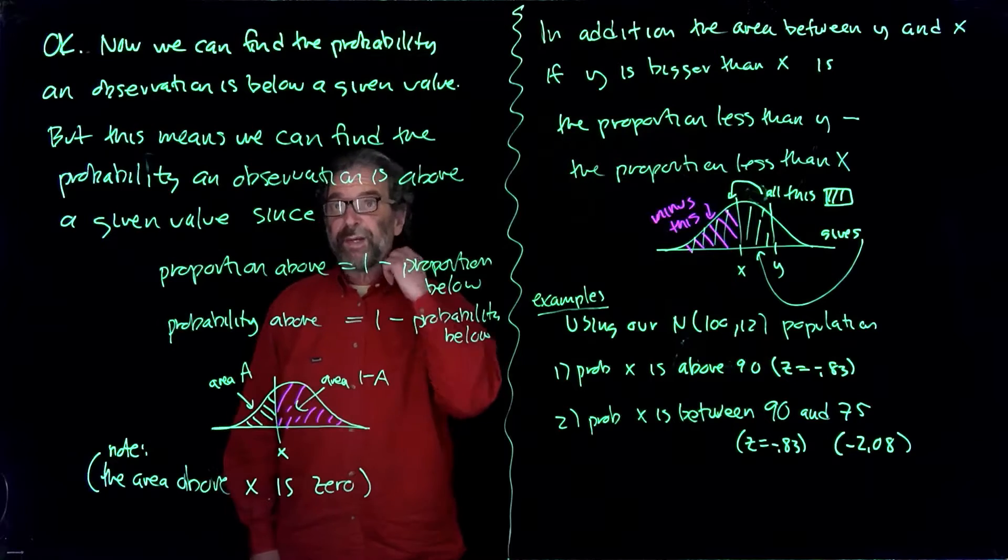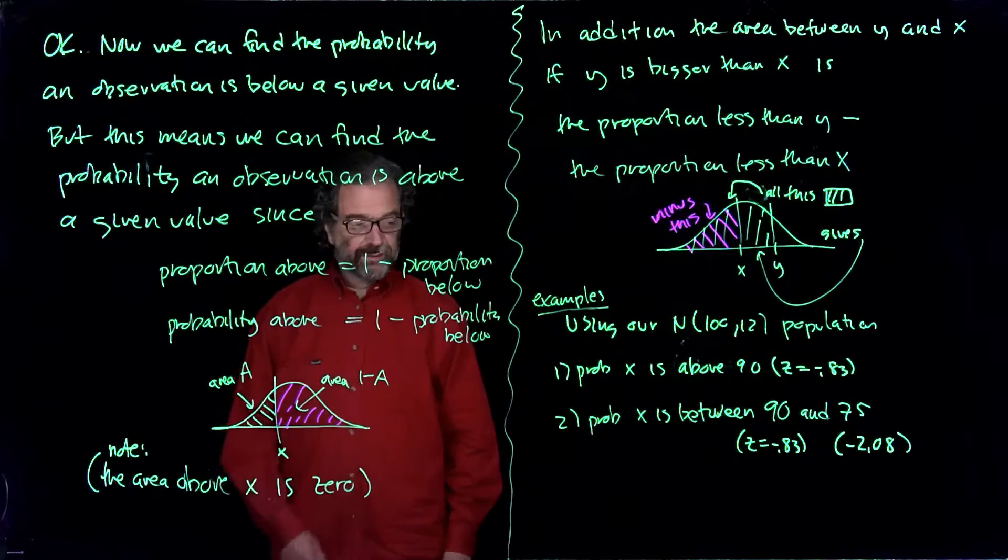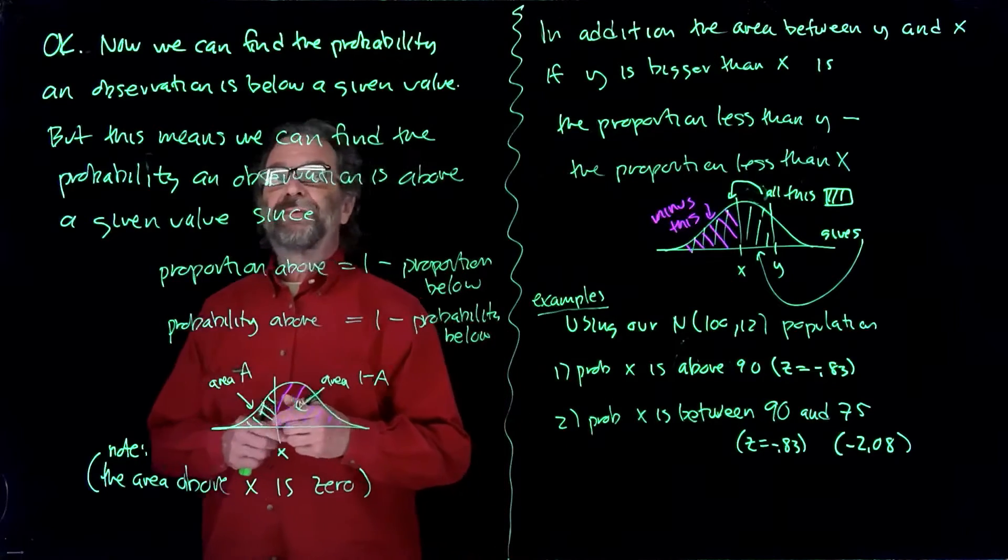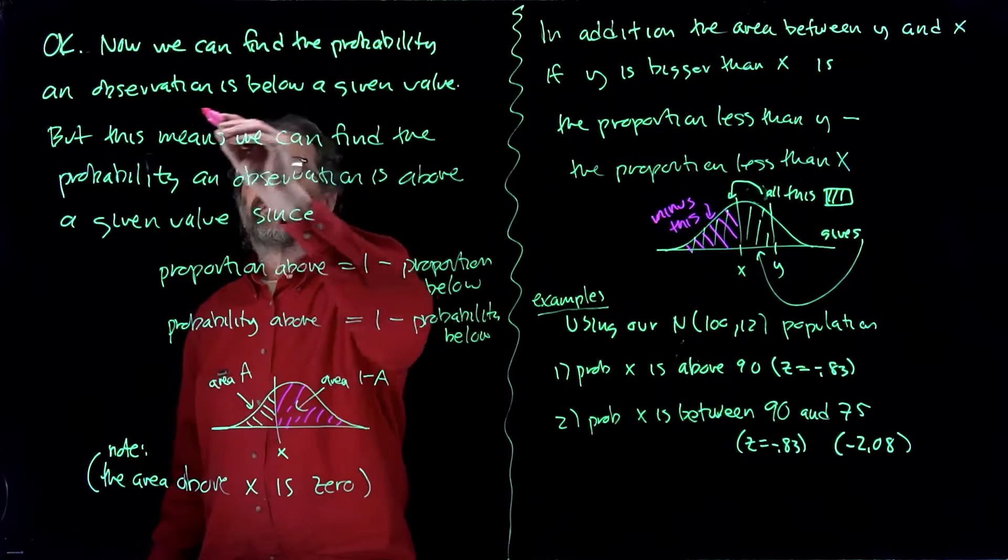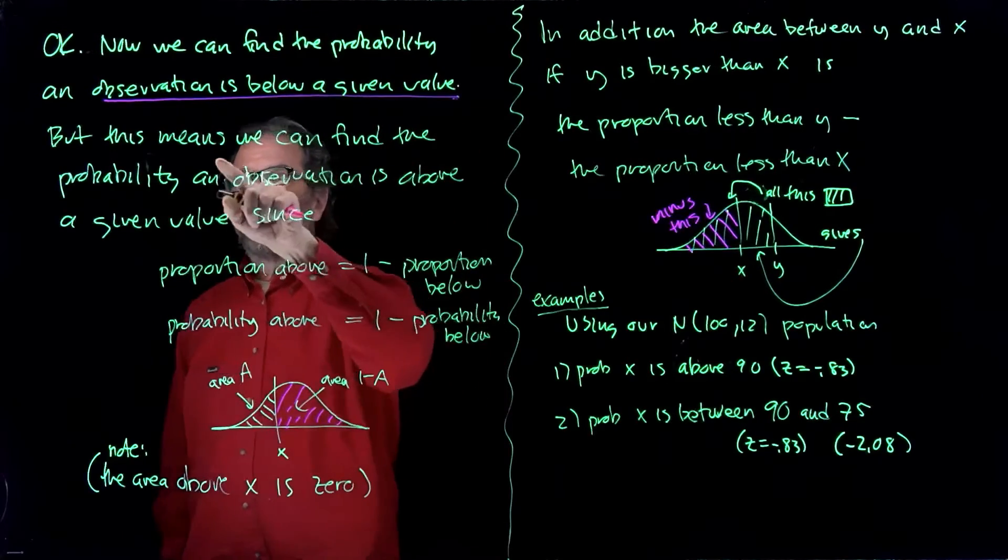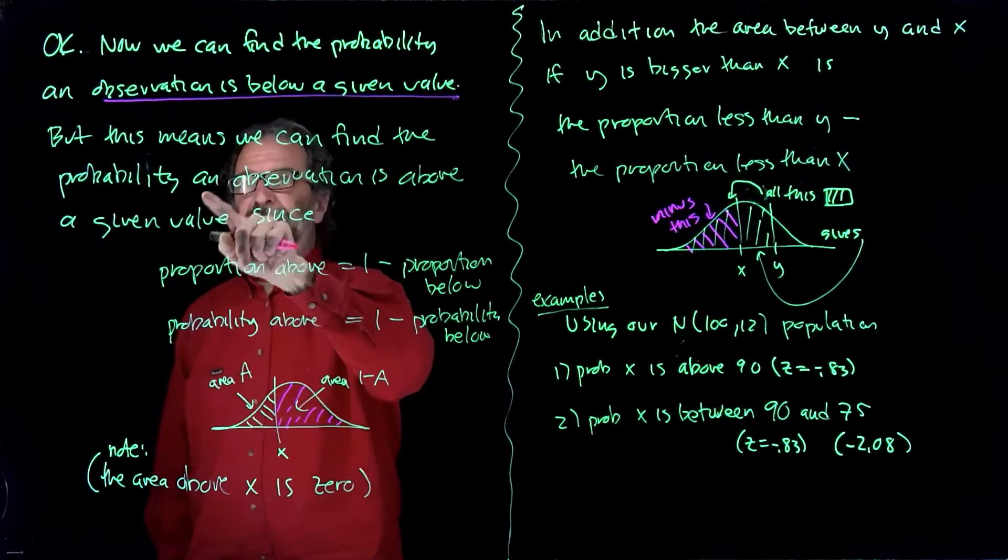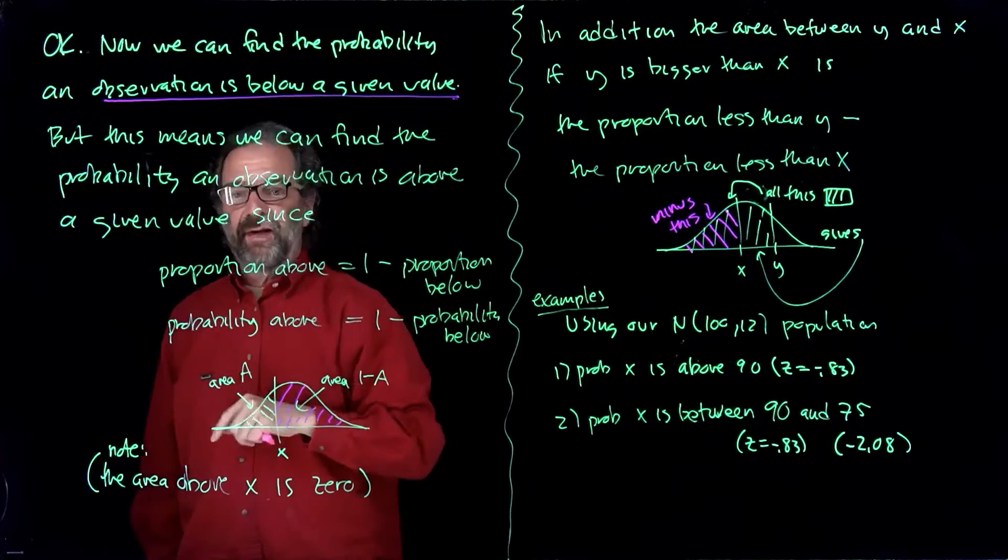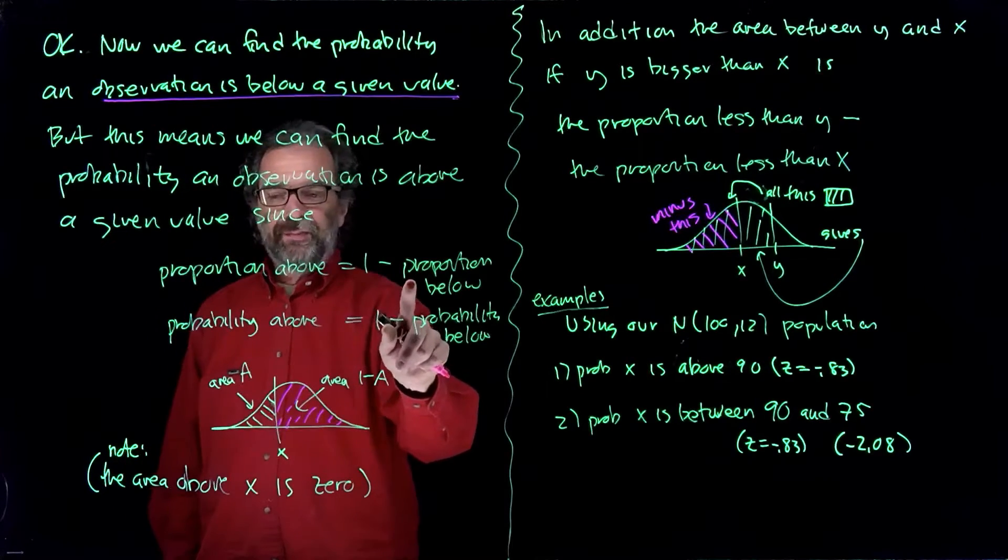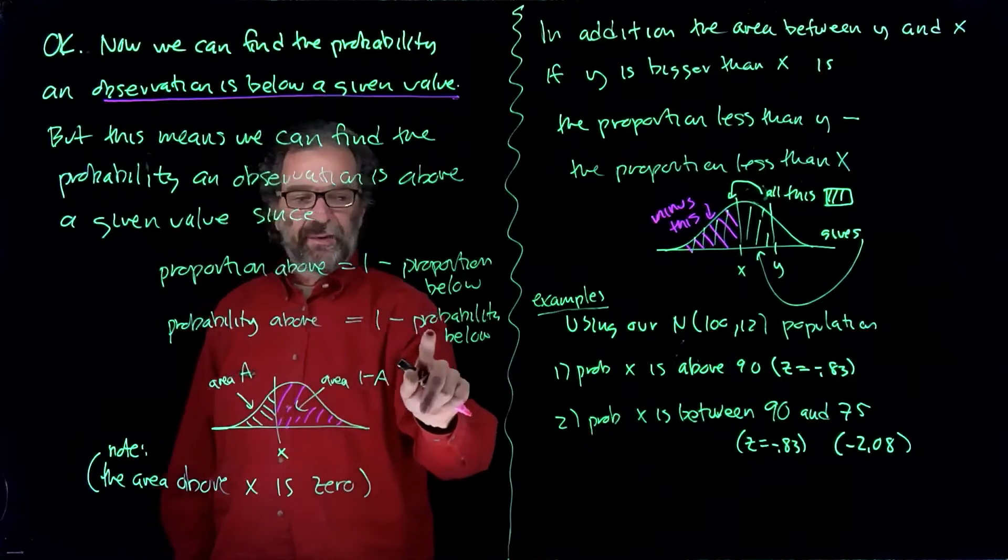So let's expand our horizons a little bit. We know how to compute the probability an observation is below. But this means we can find the probability an observation is above a given value, because the proportion above is one minus proportion below, or probability above is one minus probability below.